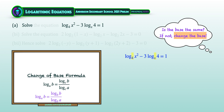We can also derive a special case of this formula if we decide to change to the base of b instead of c. Since log b to the base of b is equal to 1, we will now have the quick formula of log b to the base of a equal to 1 divided by log a to the base of b — that is, swapping the positions of both a and b.